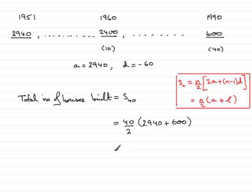If you do that sum on your calculator, you should find that you get 70,800. So 70,800 houses were built during this period. That brings us to the end of this question.